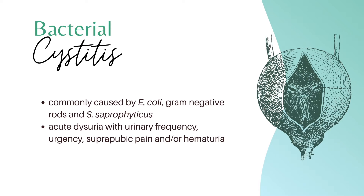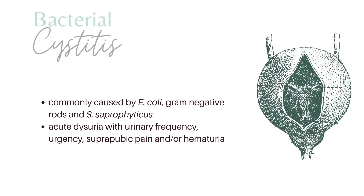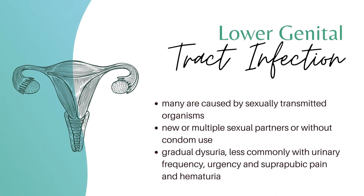Bacterial cystitis presents as acute dysuria with urinary frequency and urgency, suprapubic pain, and/or hematuria. Lower genital tract infections are caused by sexually transmitted infections and occur more in women with new or multiple sexual partners, especially without condom use. It presents as gradual dysuria, less commonly associated with urinary frequency, urgency, and suprapubic pain and hematuria.